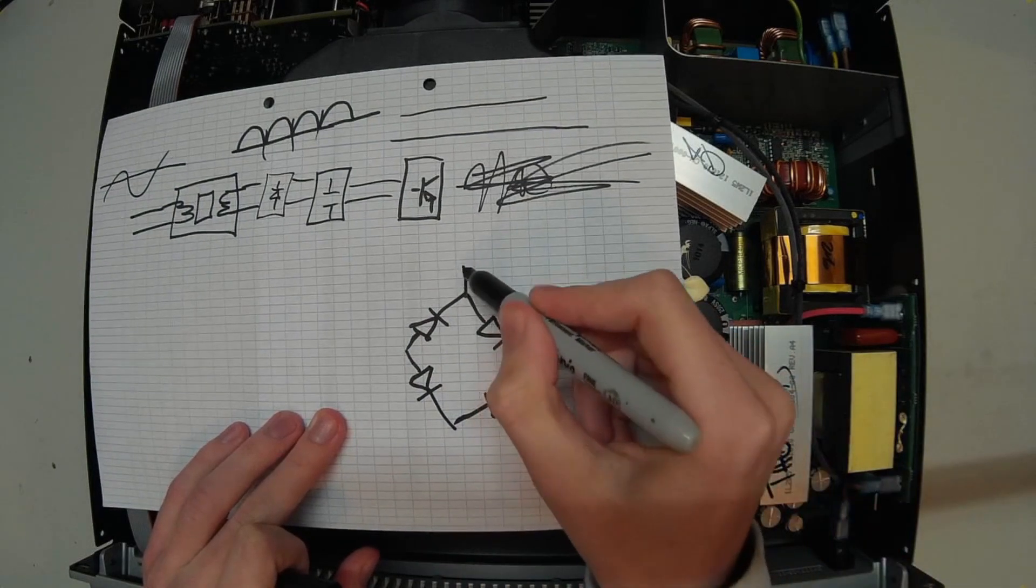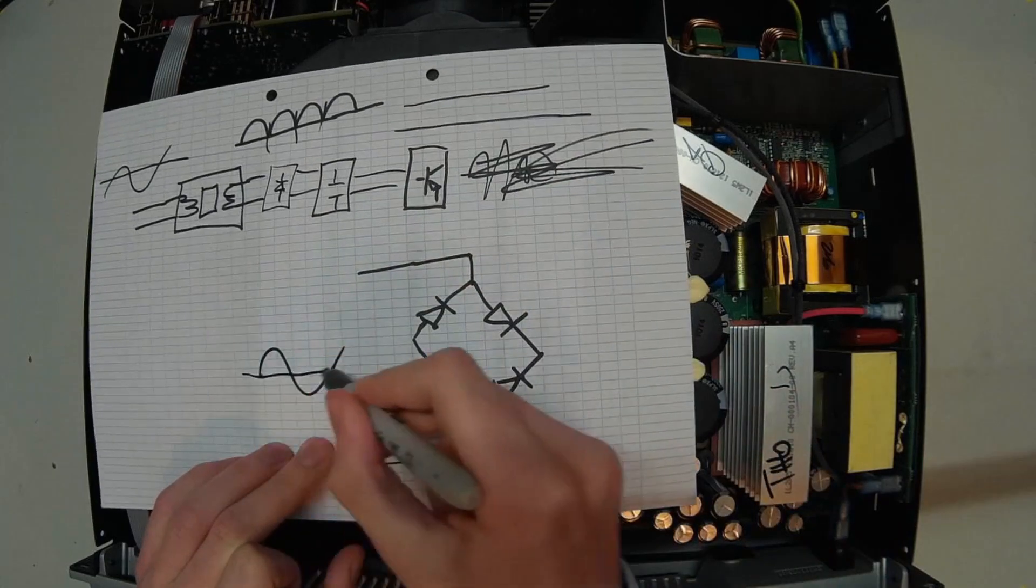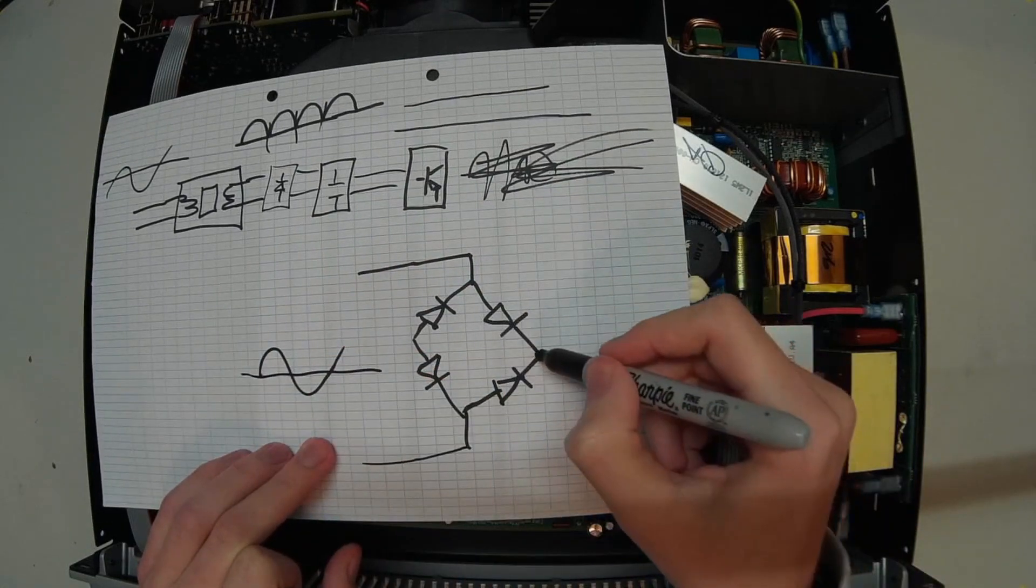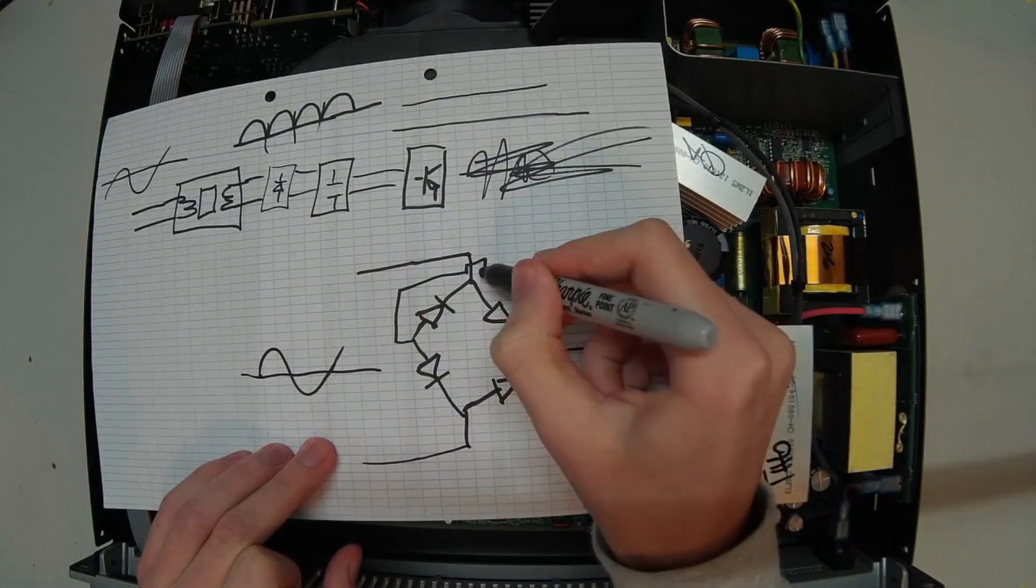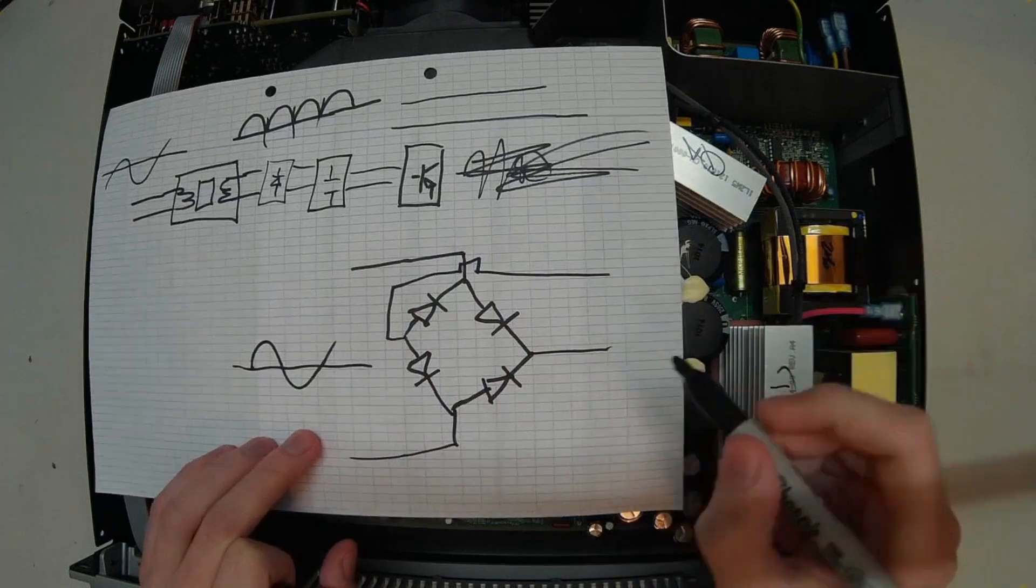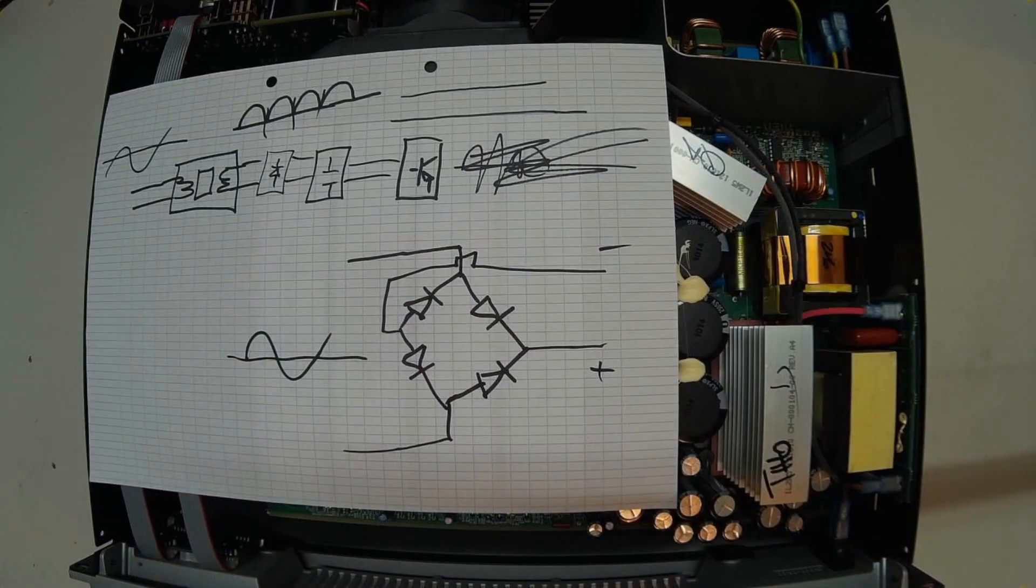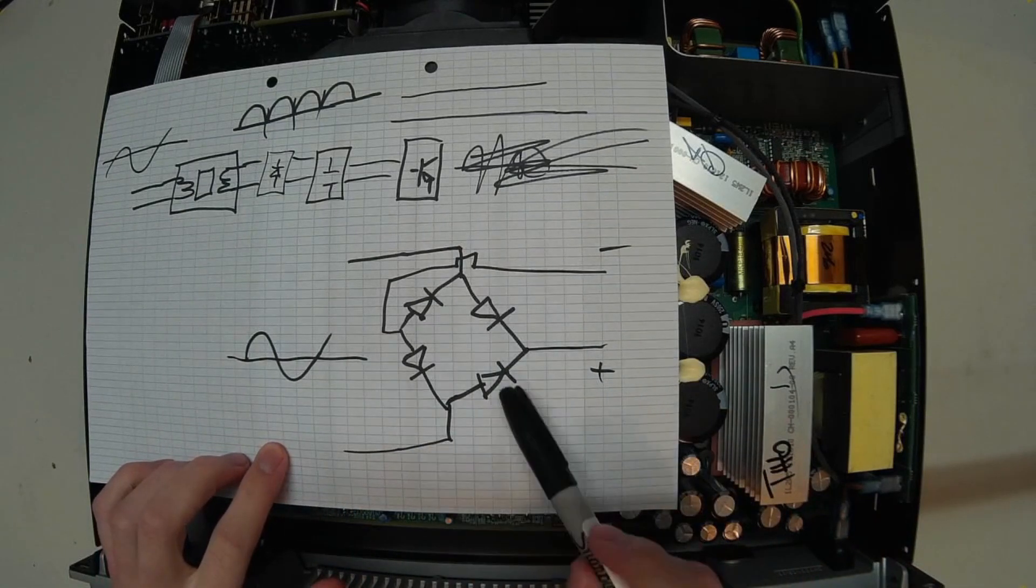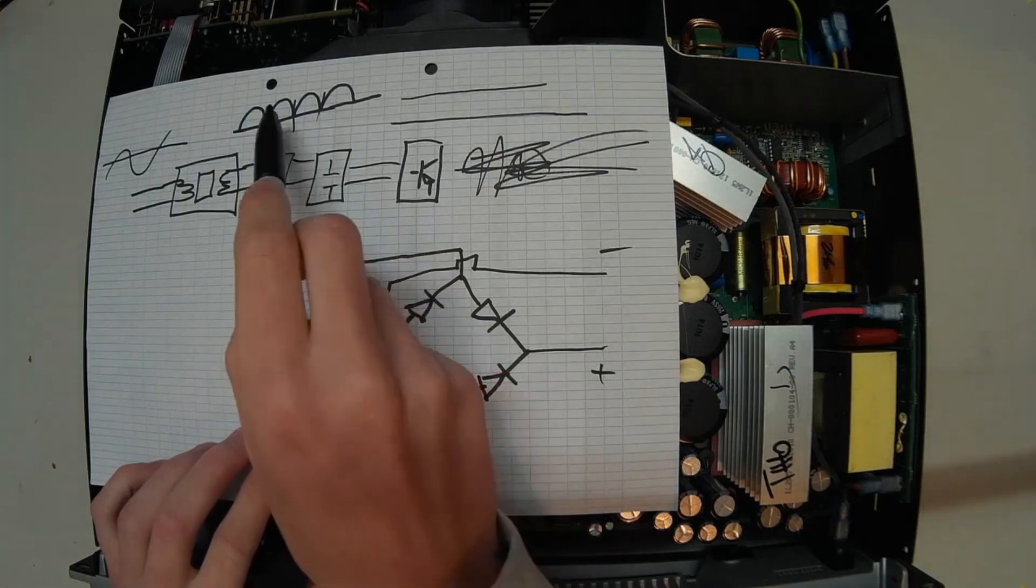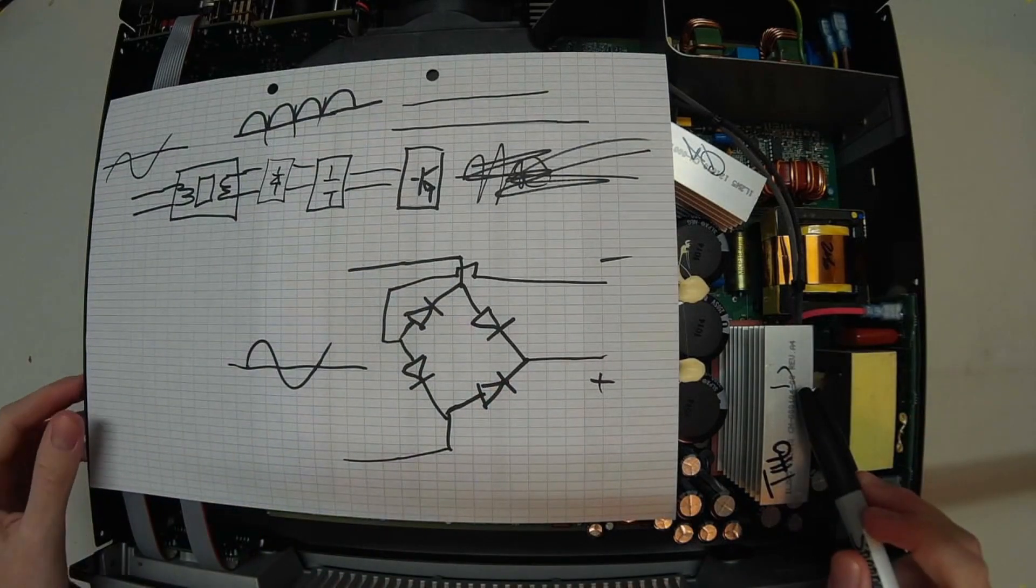So you have your AC voltage coming in here, which looks like this, and you have your DC voltage exiting here. So you have your positive here and your negative here. And the voltage that exits this full bridge rectifier is what they call this diode configuration, it looks like this. So that's what happens here, it gets rectified to AC.